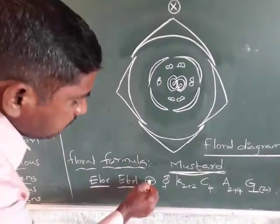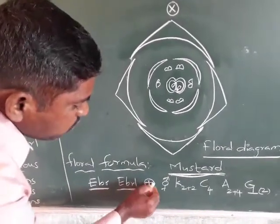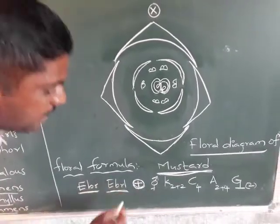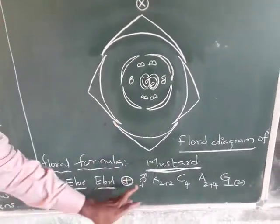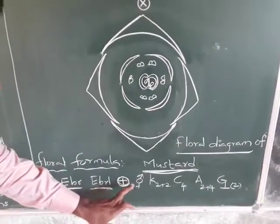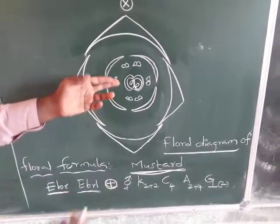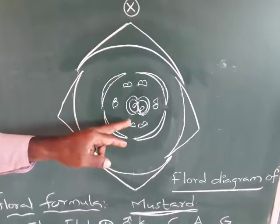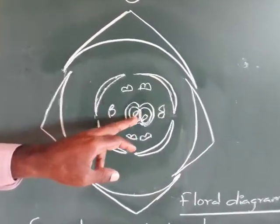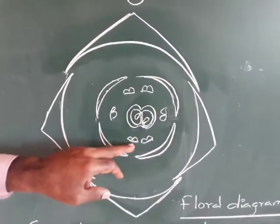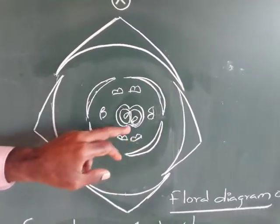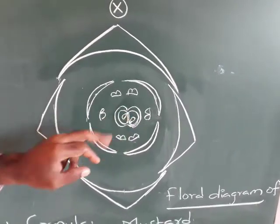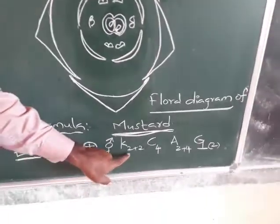The mustard flower is actinomorphic and bisexual. Being bisexual means it has both androecium — represented by the stamens — and gynoecium present.